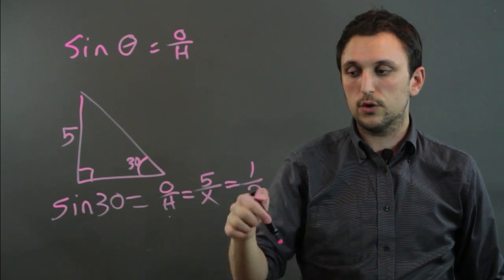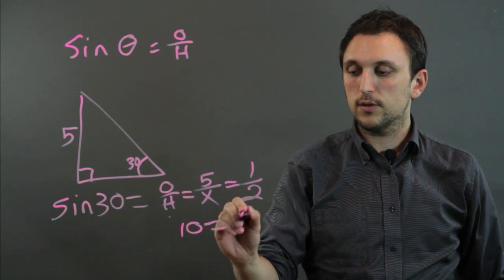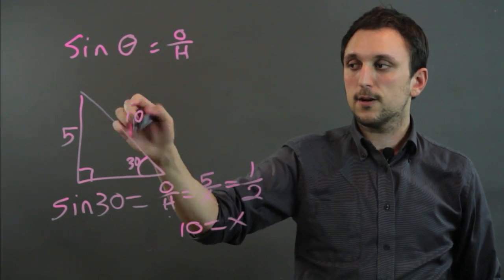So 5 over x equals 1 over 2 so you cross multiply and 10 equals x which means that this side here equals 10.